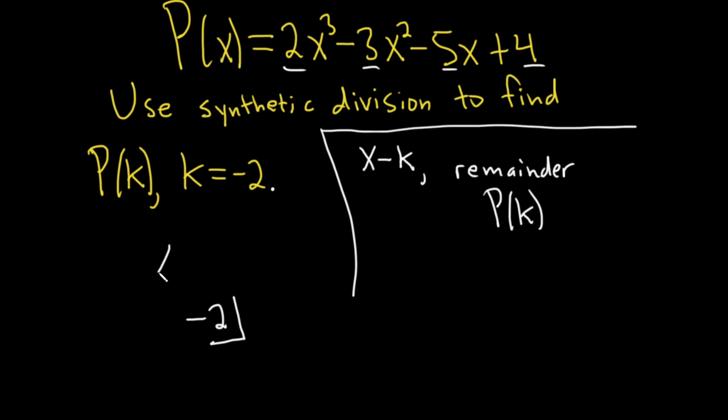We're dividing by x minus k here. So we're dividing by x plus 2 because it's minus negative 2. Just as a little note, you can just take this number and put it here.